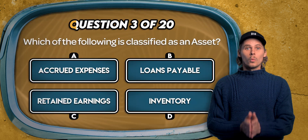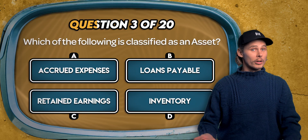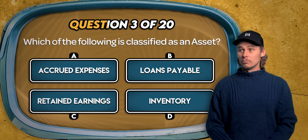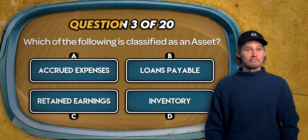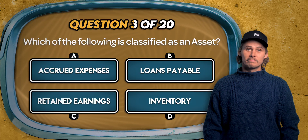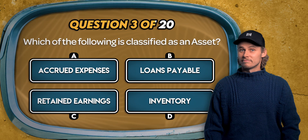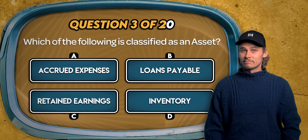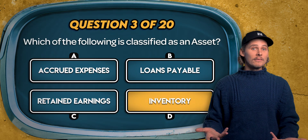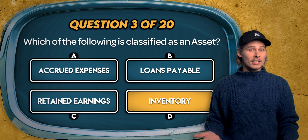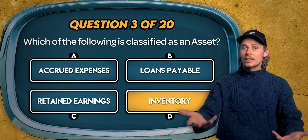Question 3. Which of the following is classified as an asset? Is it accrued expenses, taxes, loans payable, retained earnings, or inventory? The answer is D: inventory is an asset because it's a resource that a business owns that it expects to sell in the future for economic benefit.